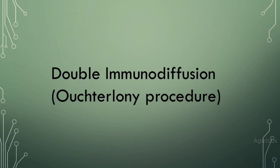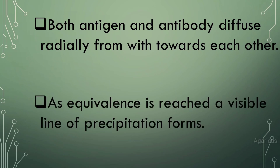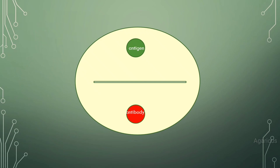Next, double immunodiffusion, also known as the Ouchterlony procedure. Both the antigen and antibody diffuse radially from their wells towards each other. As equivalence is reached, a visible line of precipitation forms. On the agarose plate gel slide, antigen is poured into one well and antibody into the second well; after incubation the precipitation line will form.